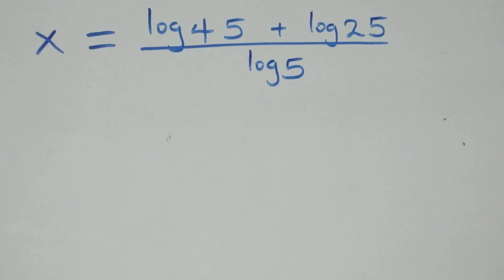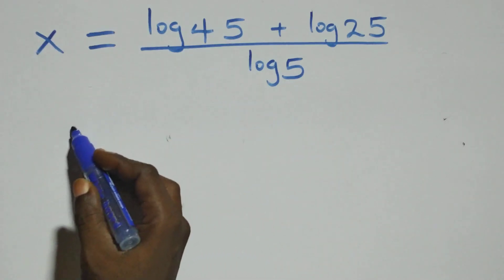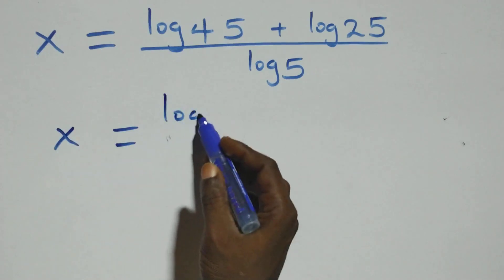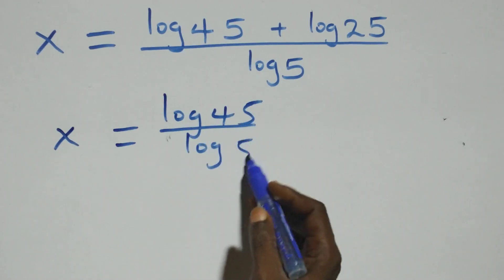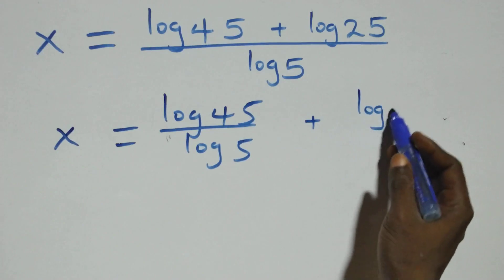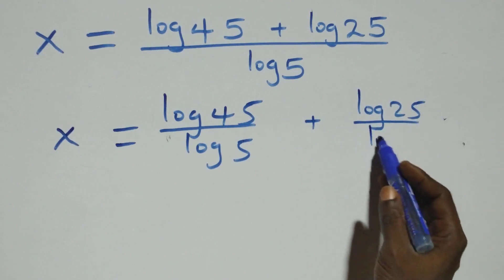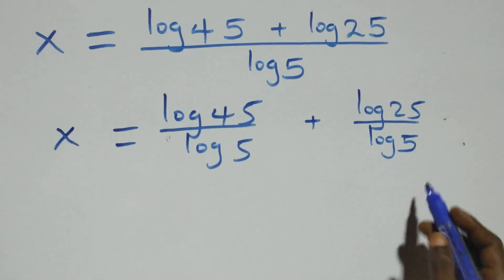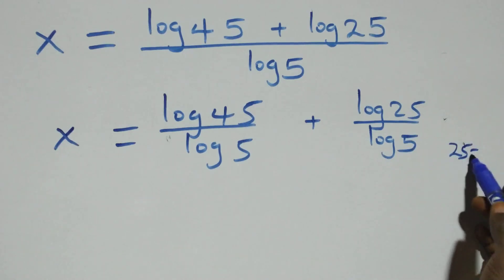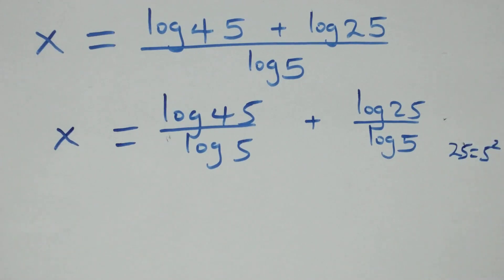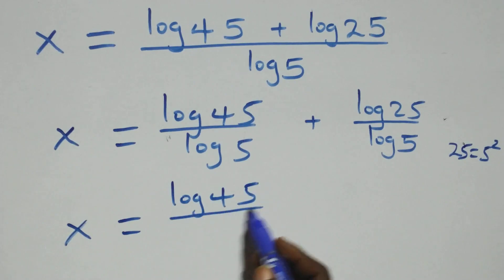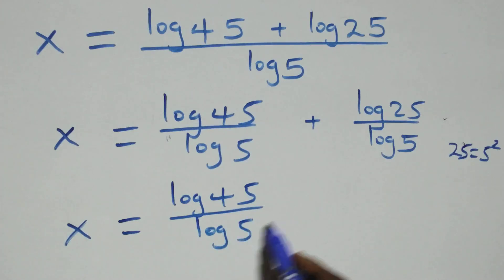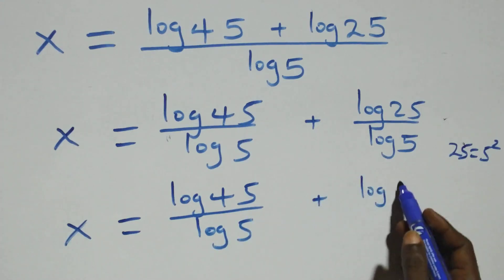Next step: we can separate this into two fractions, and we have x equals to log 45 over log 5 plus log 25 over log 5. Then from here, 25 is the same thing as 5 times 5, that is 5 squared. This implies the equation becomes x equals to log 45 over log 5 plus log 5 squared over log 5.